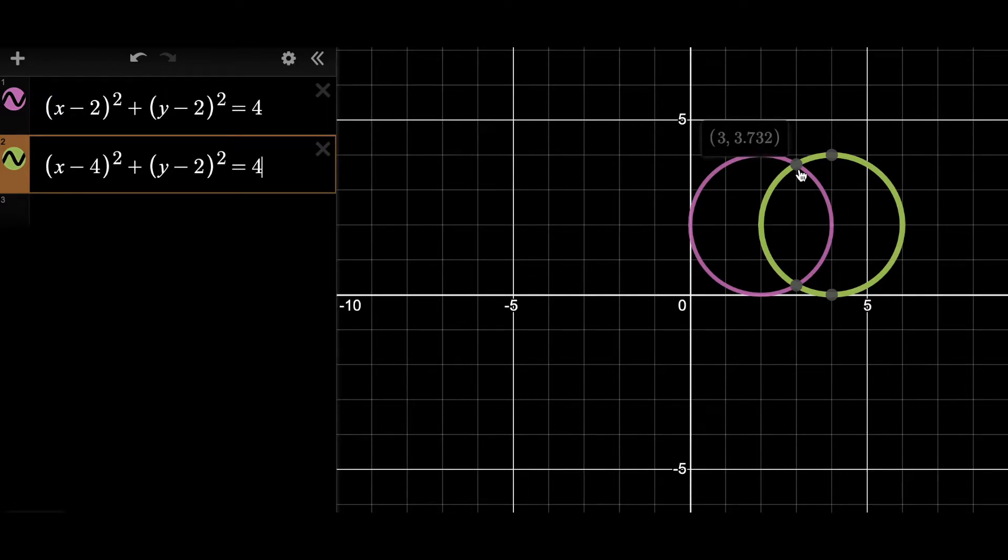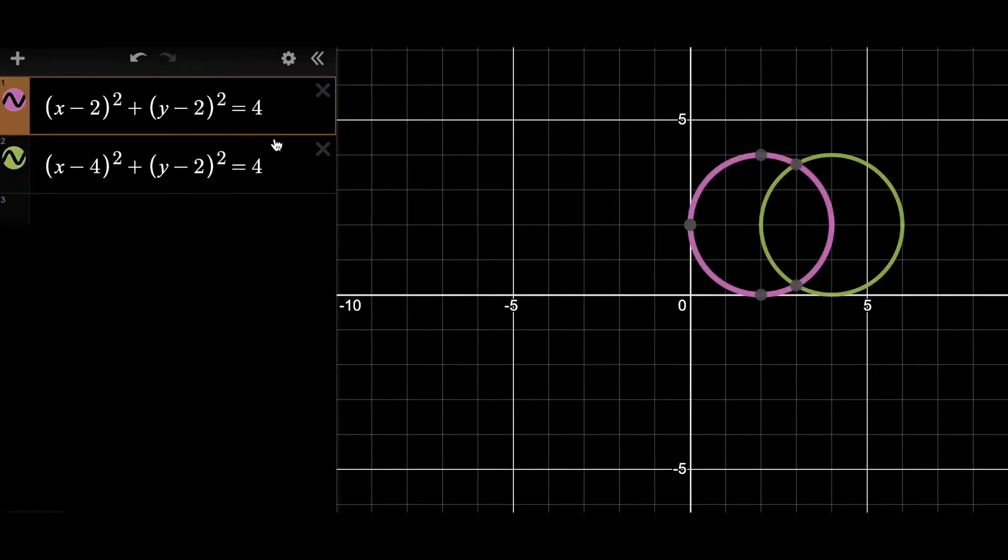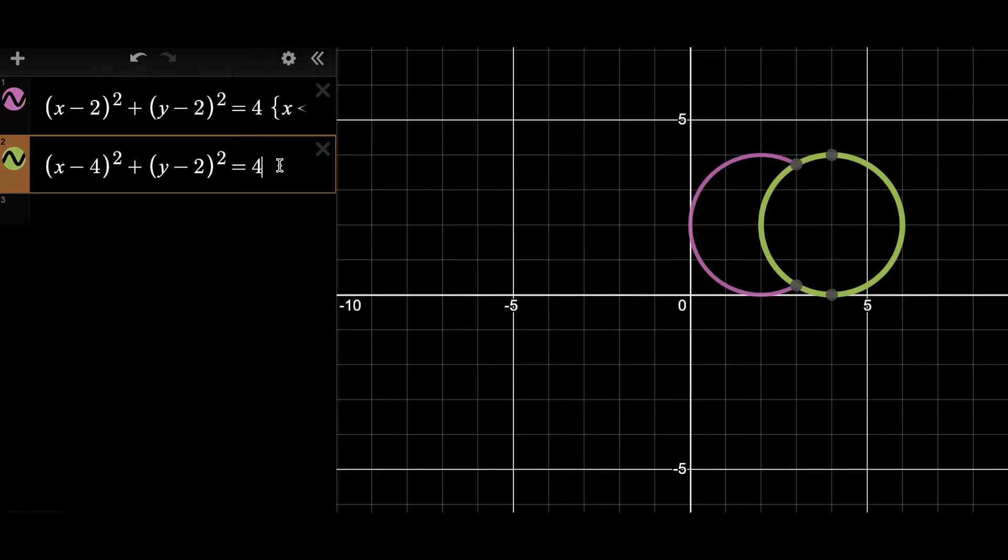And now we can find the intersections of these two circles, which happens as x equals 3. So then I just want to keep the left side of both circles to the left of 3. Here we go, we have a waxing moon.